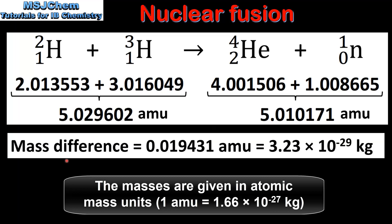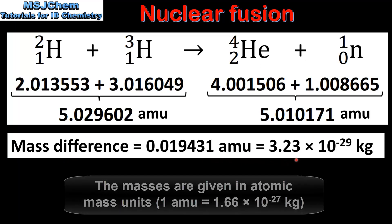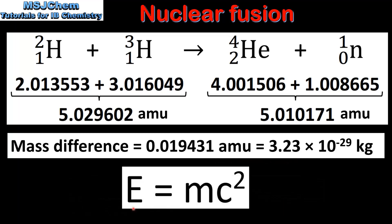Here we have the value of the mass difference in atomic mass units, which is then being converted to kilograms. We then use the equation E equals MC squared, where E is energy released, M is the difference in mass between the reactants and the products, and C is the speed of light.